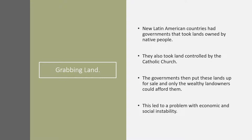New Latin American countries had governments that took lands owned by native people and also land that had been controlled by the Catholic Church. The governments then put these lands up for sale. Because workers were paid very low wages, only the wealthy landowners could afford them. This led to a problem with economic and social instability.